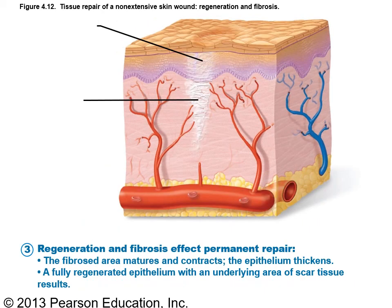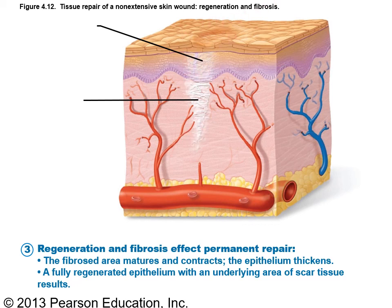The last process involves regeneration and fibrosis affecting permanent repair. The fibrous area matures and contracts. The epithelium thickens and a fully regenerated epithelium overgrows the underlying scar area. If you could rip off the epithelium, the connective tissue beneath will always show where the injury was — there's always a scar there underneath, even if the surface looks healed.